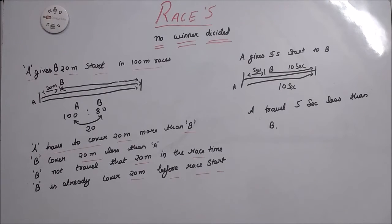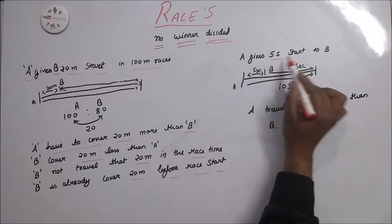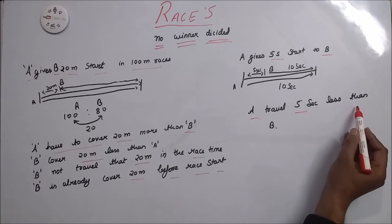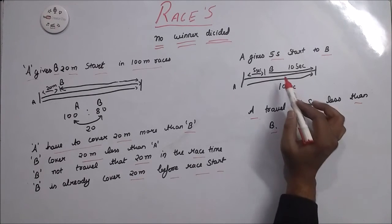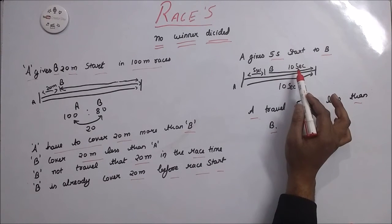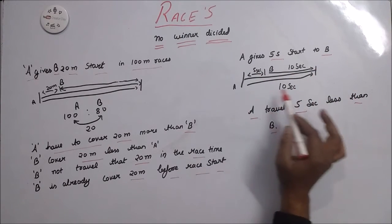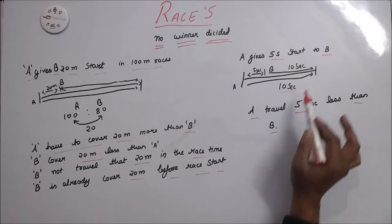And now A gives 5 seconds start to B. That means A travels 5 seconds less than B. Here time taken by B is 10 plus 5 to reach this position, and A takes 10 seconds to reach this position. This will easily simplify that A travels 5 seconds less than B.